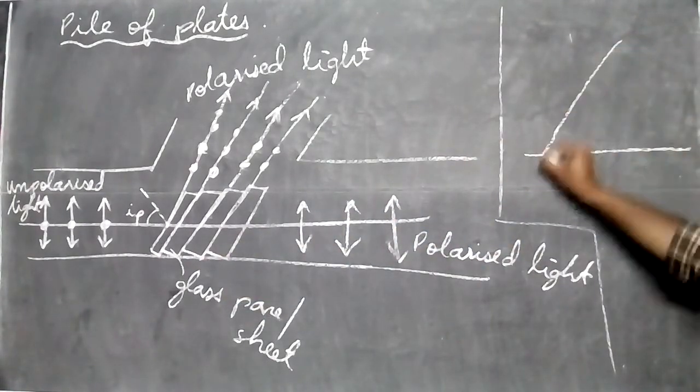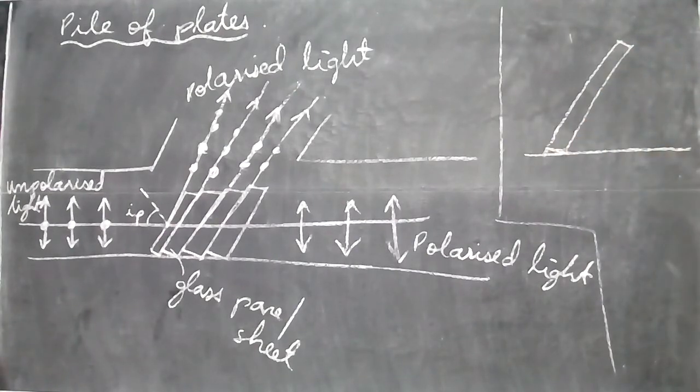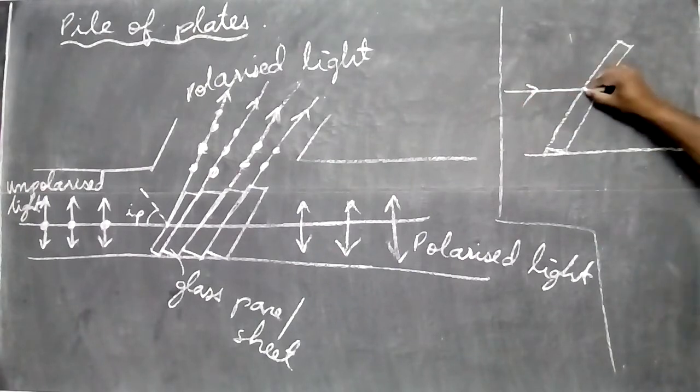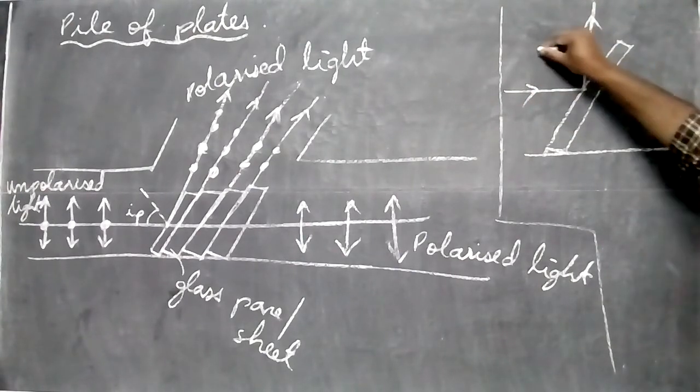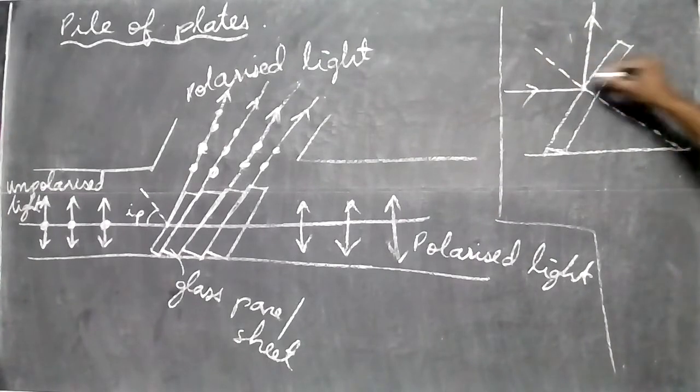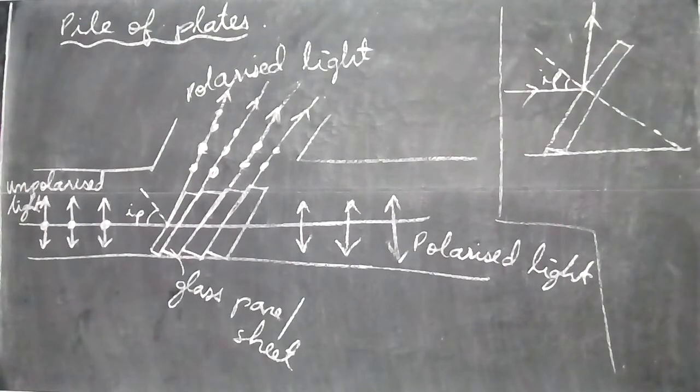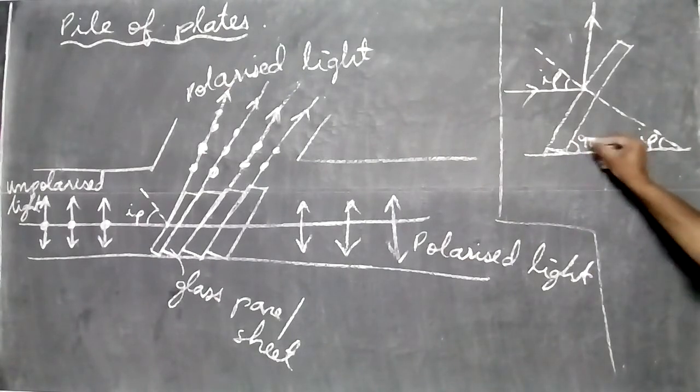This is a separate diagram. This is one pane of glass. The light ray comes here, hits here, and then goes upwards. At this point we'll draw a normal like this. So this angle is IP, the polarizing angle. If this angle is IP, this angle must also be IP. Then this angle is 90 minus IP.